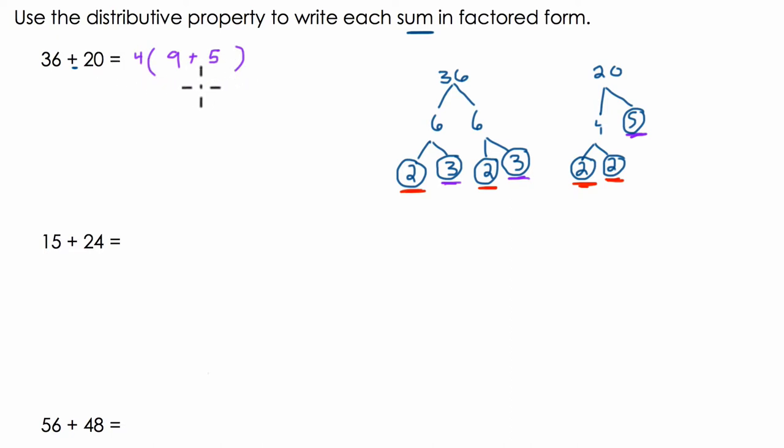So you can use the greatest common factor times the remaining prime factors to construct the numbers inside the parentheses. Now, these two things are equal, and we know that because of the distributive property. This is the answer in factored form because 4 is the GCF. We've got that factor out there. And if you want to test it to see are these things equal, we could use the distributive property. 4 times 9 is 36, and 4 times 5 is 20.